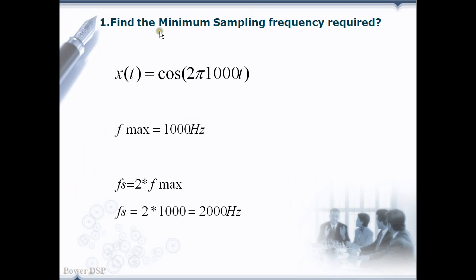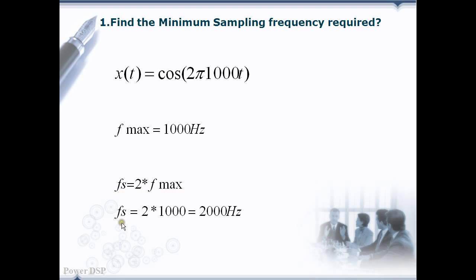In this example, we need to find the minimum sampling frequency required. A cosine component of 1000 Hz is given as an input signal. Only one frequency component is present here, so it is the maximum frequency component. f_max is equal to 1000 Hz. We know the sampling theorem: the minimum sampling frequency is equal to twice the maximum input frequency, so f_s = 2 * f_max.